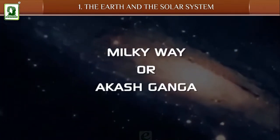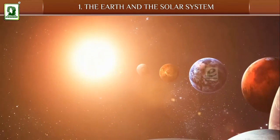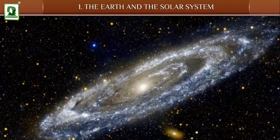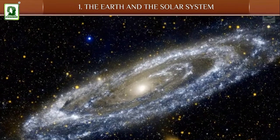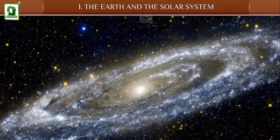Milky Way or Akash Ganga. Our solar system is a part of the galaxy called the Milky Way or the Akash Ganga. It is a vast galaxy with 200 to 400 billion stars.